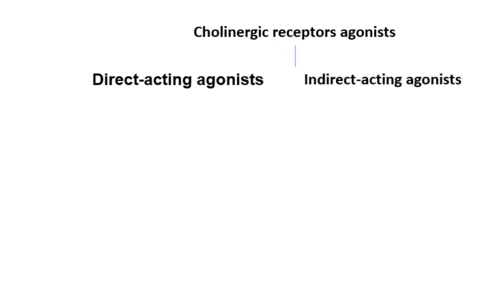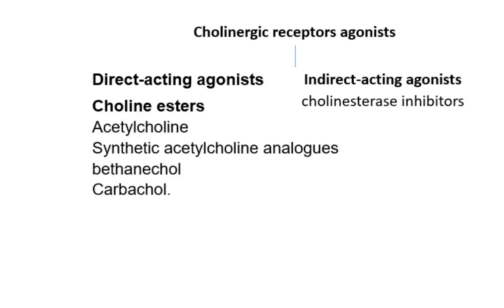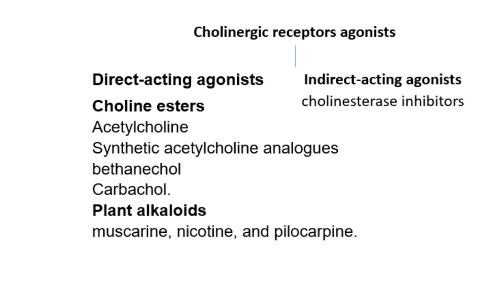Acetylcholine receptor agonists can be classified as direct acting or indirect acting. Direct acting agonists bind and activate acetylcholine receptors. Most indirect acting agonists increase the synaptic concentration of acetylcholine by inhibiting cholinesterase, whereas others augment acetylcholine signal transduction. The direct acting agonists include the choline esters, the plant alkaloids, and synthetic drugs. The choline esters include acetylcholine and synthetic acetylcholine analogs such as bethanecol and carbachol. The plant alkaloids include muscarine, nicotine, and pilocarpine.